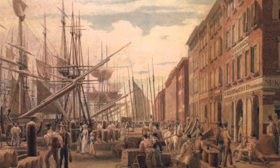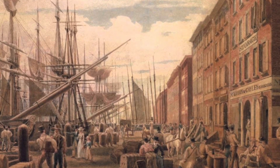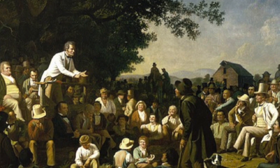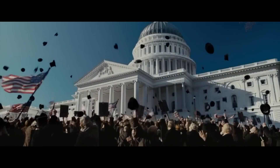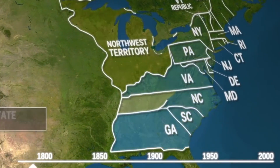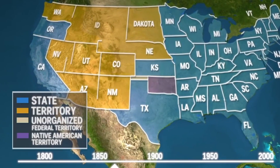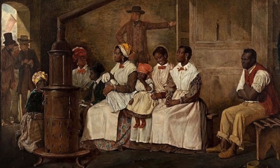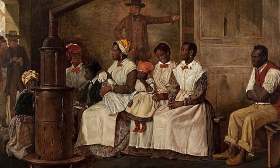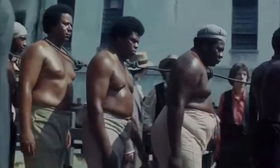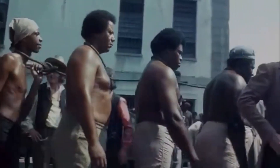From 1803 to 1854, the U.S. wasn't just growing up — it was on a real estate shopping spree, grabbing land through deals, negotiations, and even conquests. As America's map expanded, everyone started asking if these new spots should be free or slave states. This wasn't just about geography. The whole slavery debate was already shaking things up, creating a divide in public opinion.